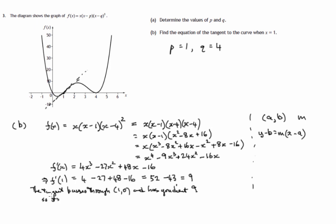So its equation is y minus 0 equals 9 times x minus 1. And that gives us y equals 9x minus 9.